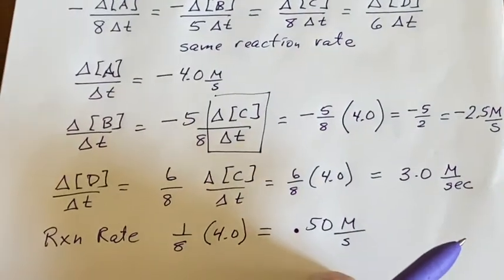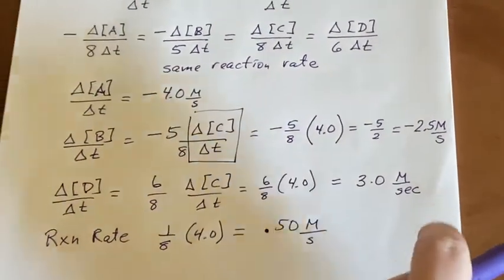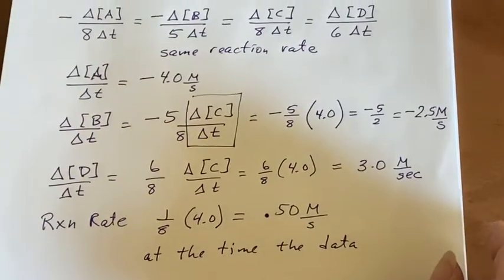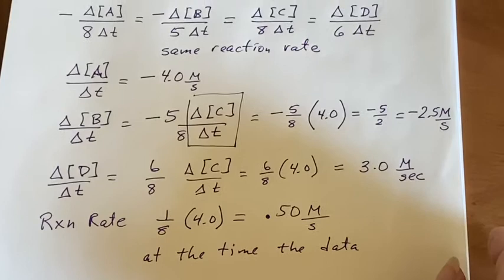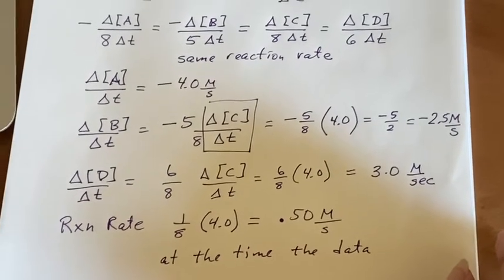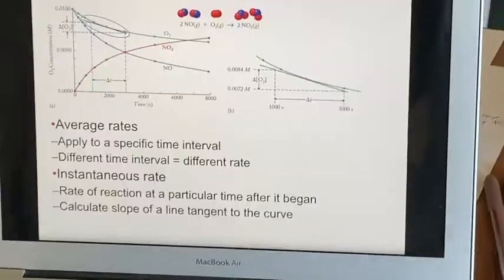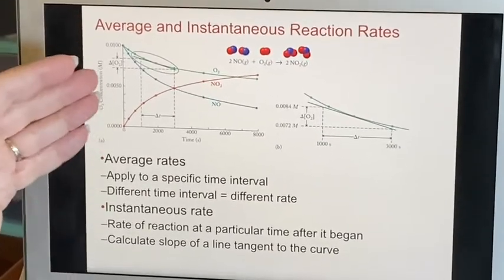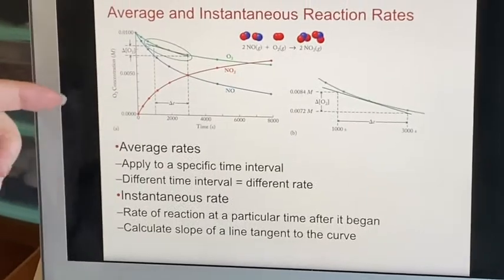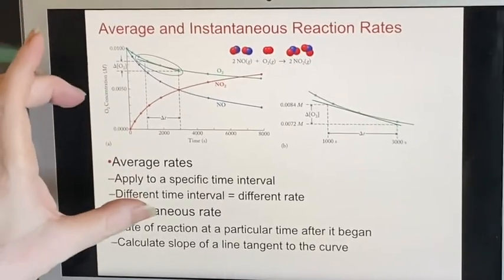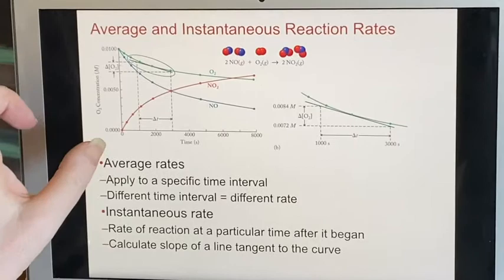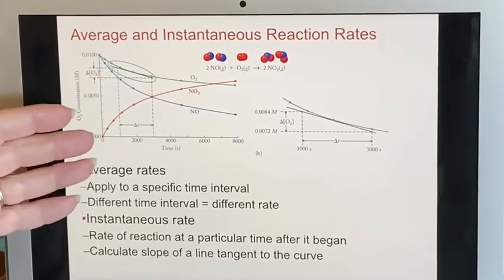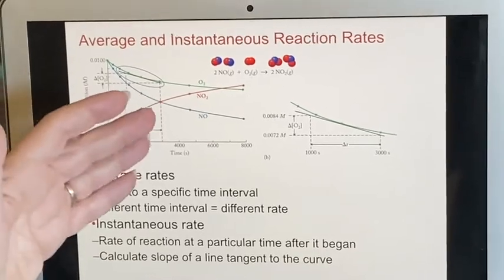Now the one thing I want to say about this is at the time the data was taken. We know that they're going to change over time because eventually, if nothing else, something's going to run out and the rate will go to zero. So if we look at average and instantaneous reaction rates, average rate is what we've been talking about. And it applies to a time interval. And if you pick a different time interval, you would get a different number. Because as you get closer to the reaction being completed, it will slow down.